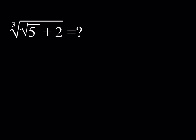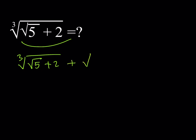First method. We're going to take advantage of the conjugates. So I'm going to write the following expression: the cube root of square root of 5 plus 2, plus the cube root of square root of 5 minus 2.